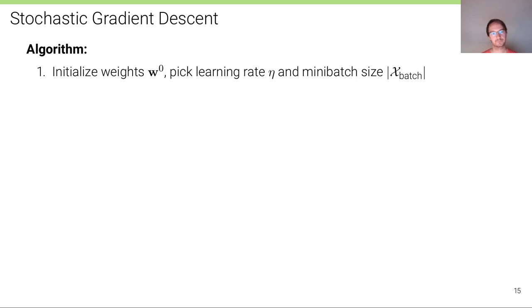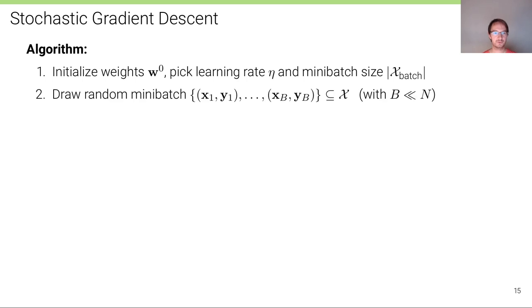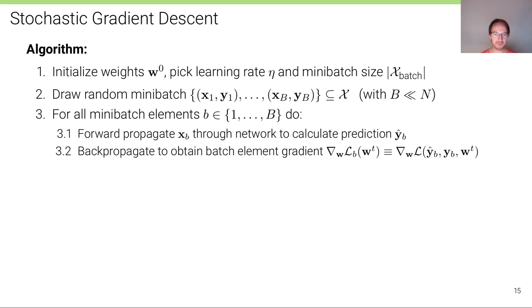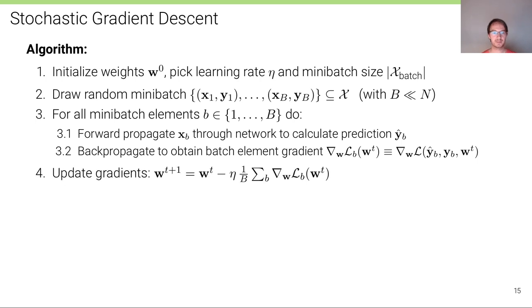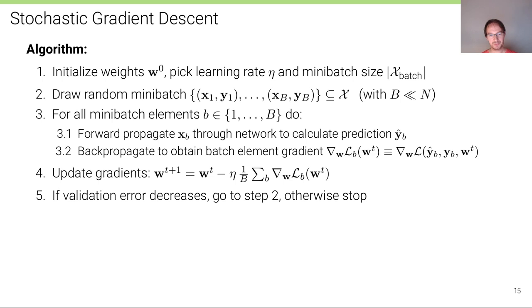Here is the SGD algorithm: we initialize the weights, pick a learning rate and a mini-batch size as an additional hyperparameter. We draw random mini-batches, forward propagate the inputs, back-propagate the gradients, and update the parameter vector by going a small step into the negative direction of the average over the mini-batch. We continue if the validation error decreases, otherwise we stop.